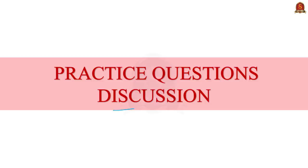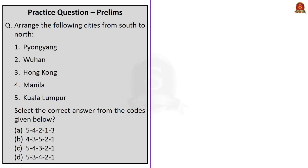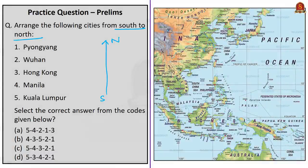Now for the practice questions discussion session. The first is a map-based question asking to arrange the given cities from south to north: Pyongyang, Wuhan, Hong Kong, Manila, and Kuala Lumpur. Kuala Lumpur is the southernmost, so eliminate option B. Proceeding northward: Kuala Lumpur, then Manila, then Hong Kong, then Wuhan, then Pyongyang. The correct answer is option C (5-4-3-2-1).